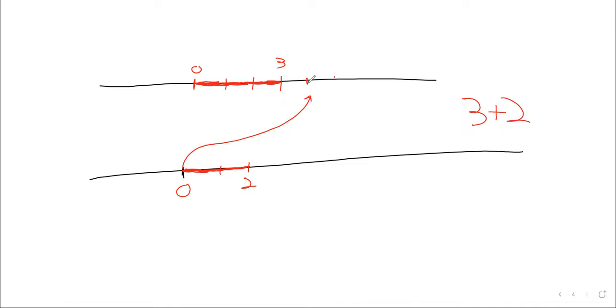Now the second piece of ribbon, I should have used different colors, the second piece of ribbon we can take it and we can move it to the end of the first piece of ribbon. And we can see on the number line that putting these pieces of ribbon together gives us three plus two equals five feet of ribbon.